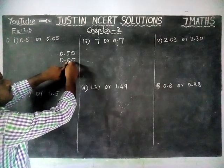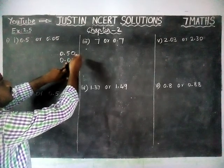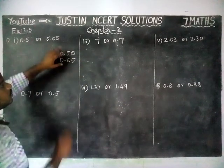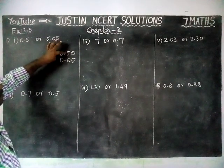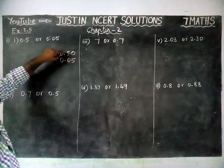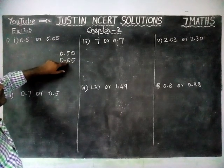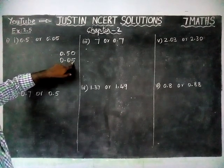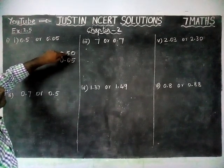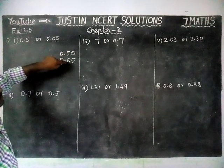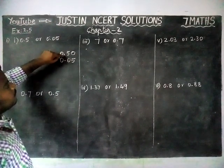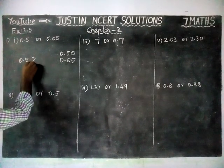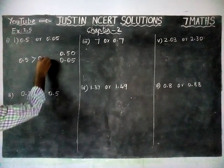When comparing, we check the second digit, third digit, fourth digit — if the digit position is increasing, the value will decrease. Here, the first digit of 0.5 is 5 and the first digit of 0.05 is 0. Since the first digits are different, 0.5 is greater. So, 0.5 is greater than 0.05.